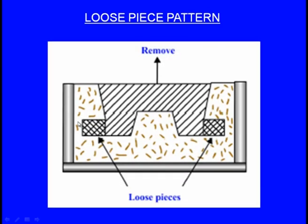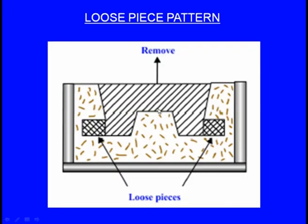After moulding is complete, there will be a little taper which enables easy withdrawal of the main pattern. We remove the main pattern first. After that, the loose piece on one side is moved towards the left and taken out, and the piece on the other side is moved towards the right and taken outside. When the loose piece pattern is used in this kind of situation, we can withdraw it very easily. That is the concept of the loose piece pattern.